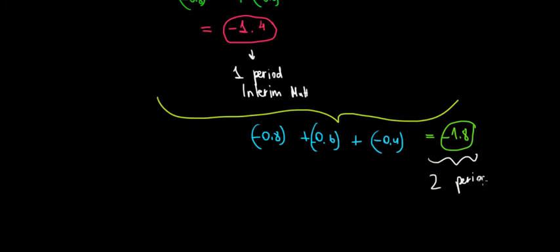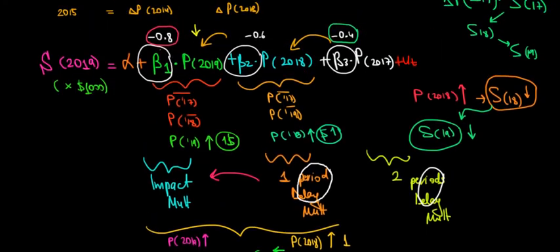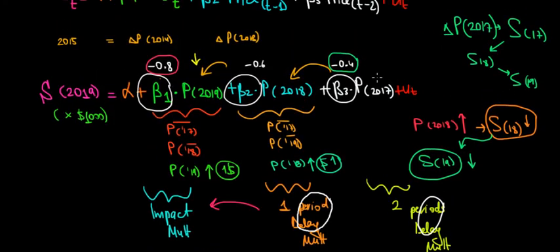So two periods interim multiplier, which happens to be equal also to the total effect. And what's the intuition of the total effect? Basically, what is the total change in sales when the price is going to increase by one unit in every period? So in every period, we have a partial effect and logically the total effect is going to be the sum of the partial effects. So if we add all this up, we would get to the same number. So that's the vocabulary that we need to know.